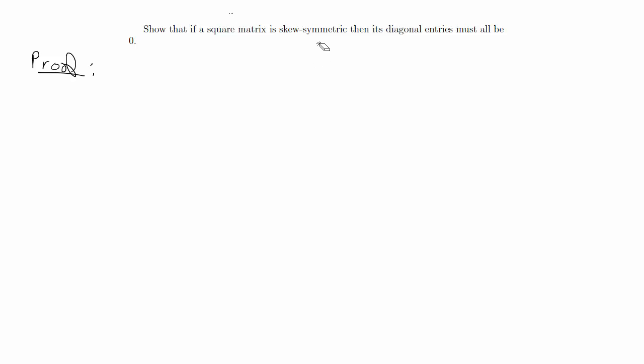What I mean is this is basically testing: do you know what it means when a matrix is skew symmetric? If you do, you can play around with that and prove that the diagonal entries must all be zero.